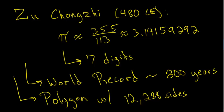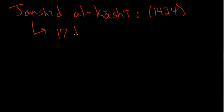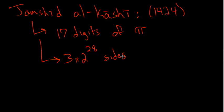The next advancement for the digits of pi comes from the Persian astronomer Jamshid al-Kashi, who in the year 1424 found 17 digits of pi. He did this using a regular polygon with 3 times 2 to the 28th power sides. This number is approximately 800 million sides.